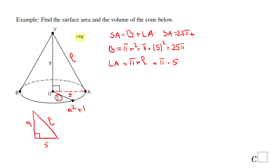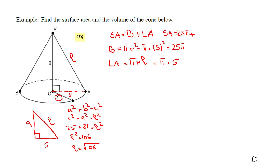So the lateral area is pi times r times L: pi times 5 times square root of 106, which is 5 pi square root of 106. The surface area is 25 pi plus 5 pi square root of 106 square units.